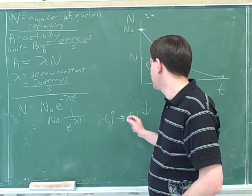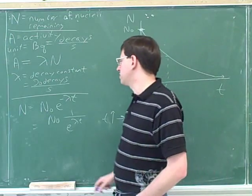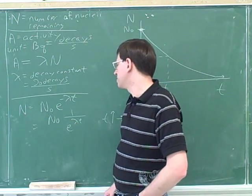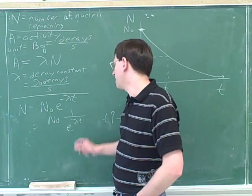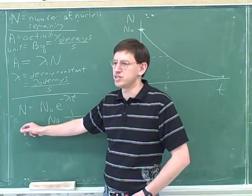As time goes on, there's fewer and fewer nuclei remaining. So even though this is usually written with a negative exponent, we should keep in mind what it really means is that as time goes on, the denominator gets bigger and bigger, and the number of nuclei asymptotically approaches 0.